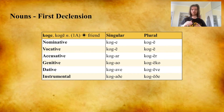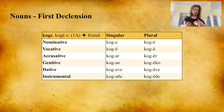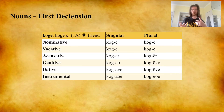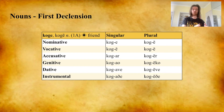Going through the singular for koge: nominative koge, vocative koge, accusative kogar, genitive kogao, dative koge, instrumental koge. The plural has a long e in all of the inflections: nominative koge (friends), vocative koge (o friends), accusative kogeer (I see the friends), genitive kogeeko (of the friends), dative kogeeve (to the friends), instrumental kogeeve (using the friends). That's it for the first declension.